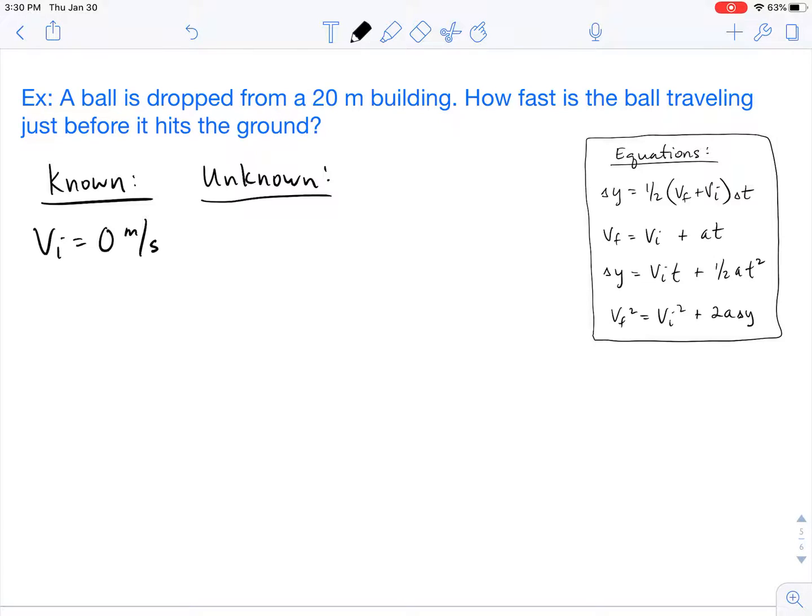It's dropped from a 20-meter building, so that's going to give us our height, which is our delta y. And since it's falling downwards, we're going to attach a negative value to it.